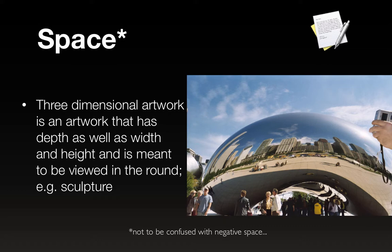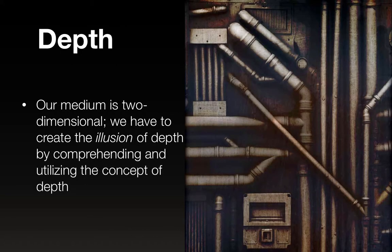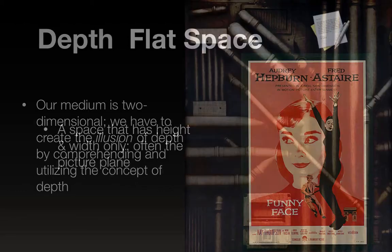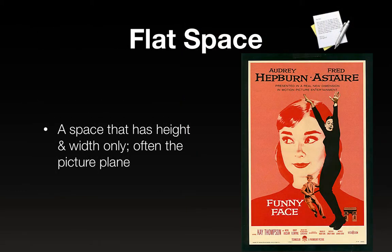This is the Bean in Chicago, and the way it's meant to be looked at is from all angles — walk around it, underneath it, and view it from all angles. That's a three-dimensional artwork. Depth is what we're trying to create the illusion of. Our medium is two-dimensional; we have to create the illusion of depth by comprehending and utilizing the concept of depth. There are a few different spaces we'll be working in for the semester.